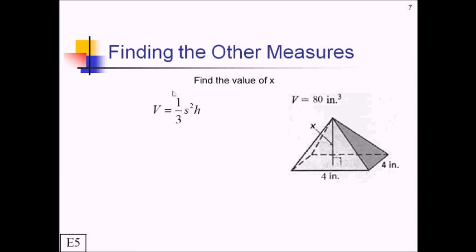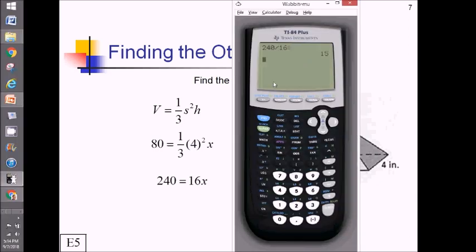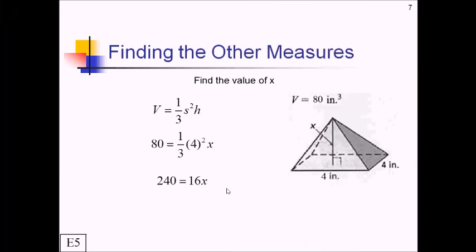Alright, see how you did. So we know that volume is 80. S is going to be this 4 right here. So we have s squared, 4 squared. And then h is actually x. Solving now, we can multiply both sides by 3. That will give us 240 on the left. 4 squared is really 16, so 16x on the right. And then we just need 240 divided by 16. Doing that on my calculator, I got 15. Now that's going to be 15 inches, because we're just talking about the height. So that's just a one-dimensional unit.